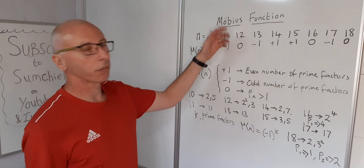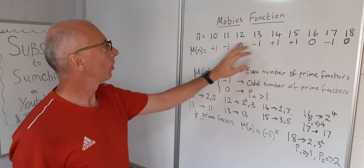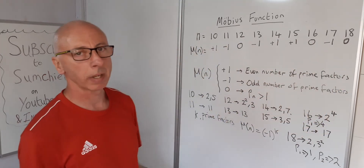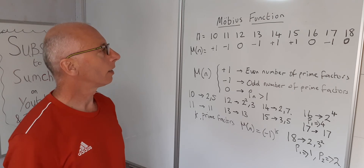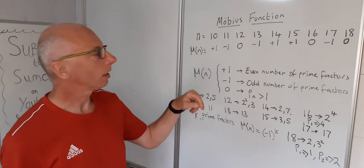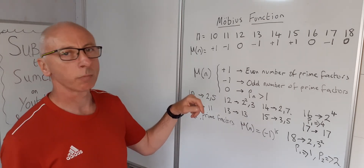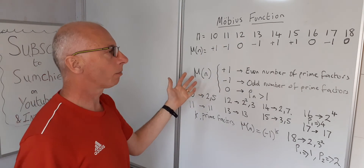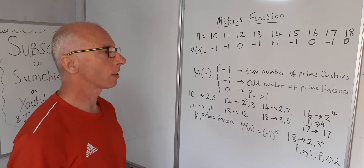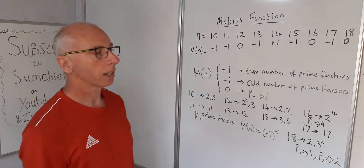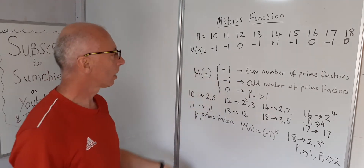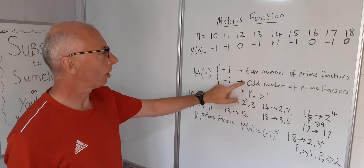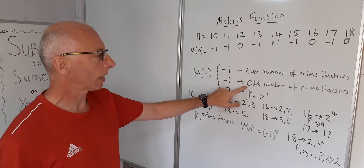So that's our Möbius function, mu of n, for the numbers 10 to 18. You can continue for as many numbers as you like — follow the link in the description for some interesting characteristics of the Möbius function. When looking at prime factors, what we're really interested in is something that's square-free: numbers with an even or odd number of distinct prime factors.